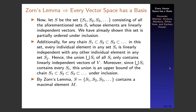We define S to be the set of all those sets of linearly independent vectors. We have already shown S to be partially ordered by inclusion. Additionally, for any chain S₁ ⊆ S₂ ⊆ S₃ ⊆ … in S, every individual element is linearly independent with any other element in any other set, so the union of all those sets contains only linearly independent vectors. Since that union contains every Sᵢ, this union is the upper bound of the chain. Thus, by Zorn's Lemma, S contains a maximal element, which we call M.